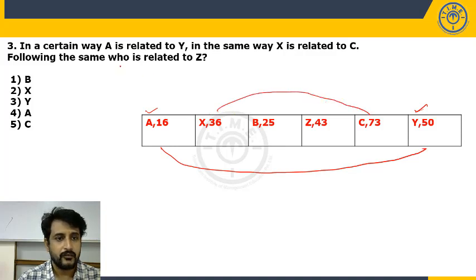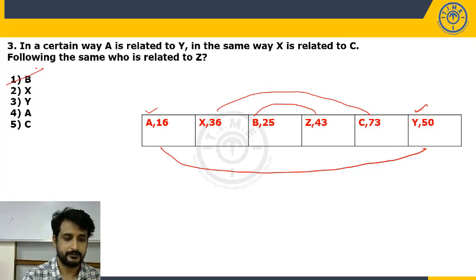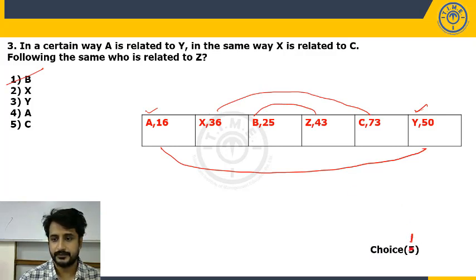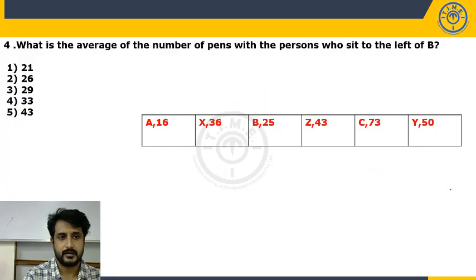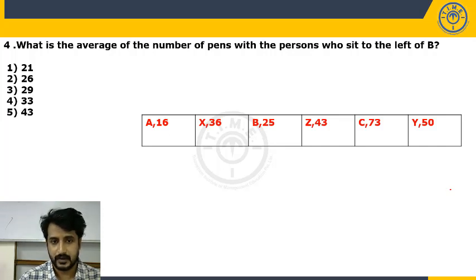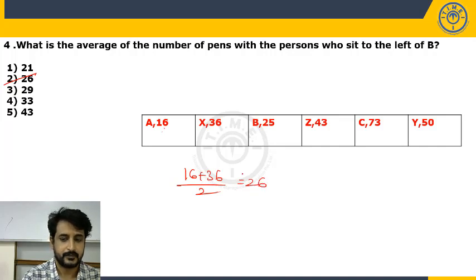Following the same pattern, who is related to G? Persons to the right of G = 2, so the corresponding person has 2 persons to their left — that is B. Answer: B, choice 1. Next question: what is the average number of pens of persons sitting to the left of B? Those persons have 16 and 36 pens. Average = (16 + 36) / 2 = 26. Choice 2.